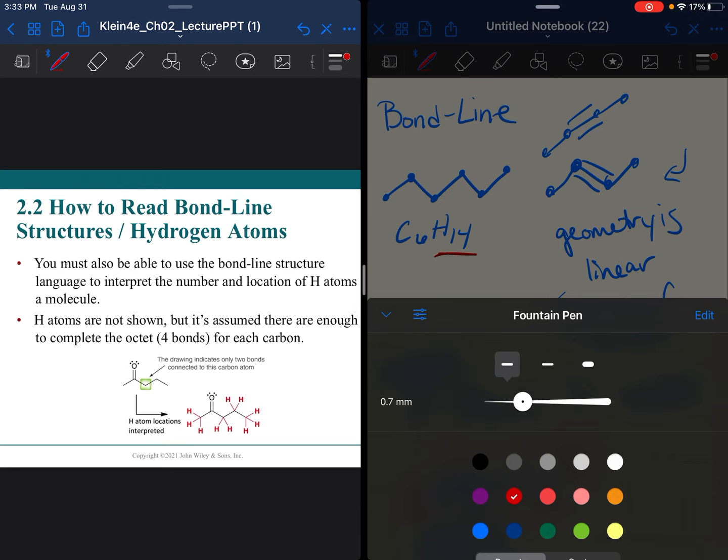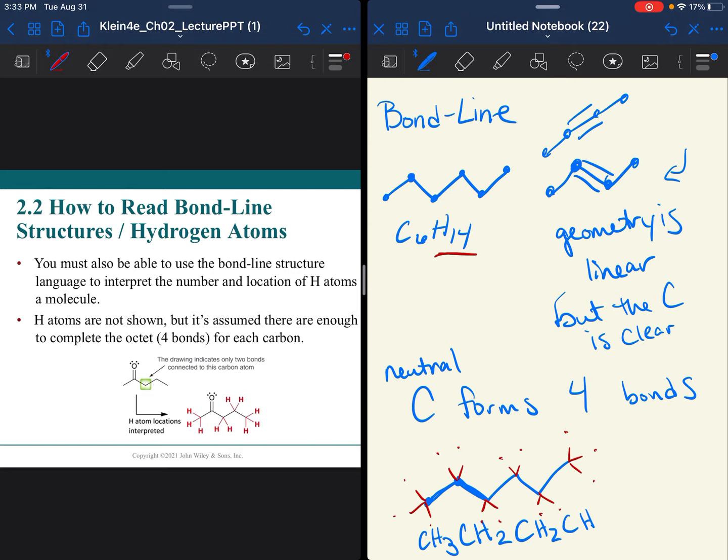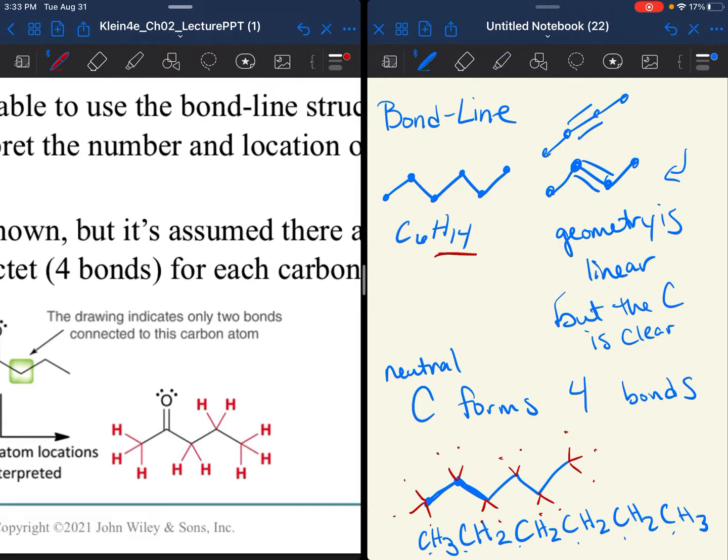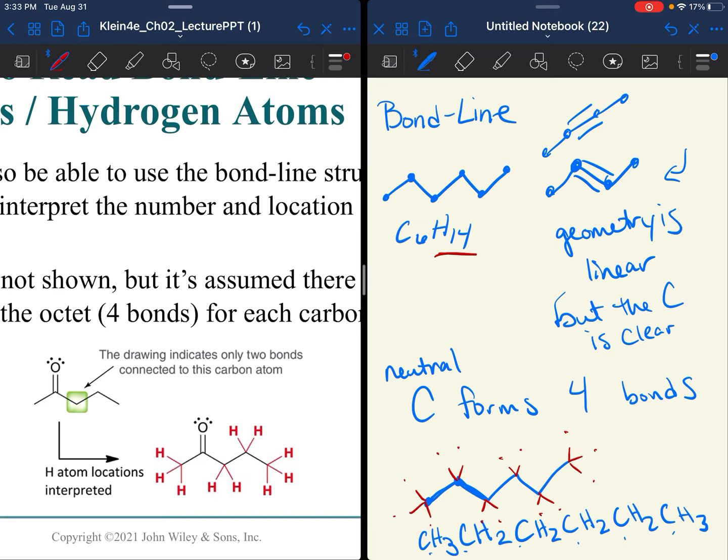If we wrote out the full condensed structure, it would be CH3CH2CH2CH2CH2CH3. When we look at the example here in the PowerPoint, we have a different functional group - we have a ketone, but it's the same idea. This carbon here attached to the oxygen already has four bond lines, so you notice there are no hydrogens on that carbon. We can leave hydrogens off of carbon because you're going to have as many as is needed to give that carbon four bonds.